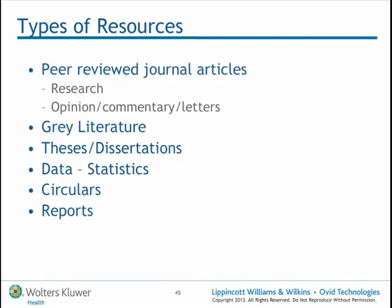And what will they find amongst these resources? Of course, the most common are the peer-reviewed journal articles — the research or opinion published there. Grey literature is an important one: the unpublished studies that systematic reviews should look for, as well as theses and dissertations.